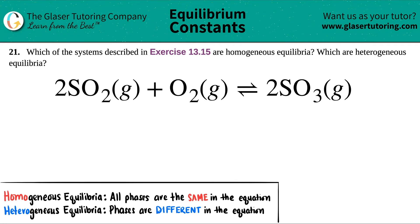Number 21. Which of the systems described in exercise 13.15 are homogeneous equilibria and which are heterogeneous equilibria? So I pulled up one example.